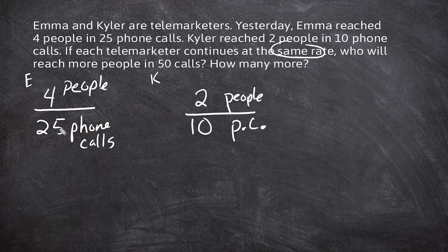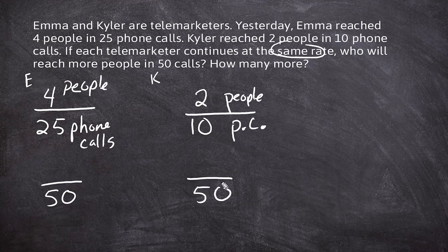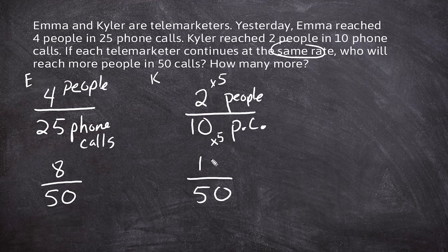We are going to convert 25 to 50 by scaling up. We also have to scale Kyler's 10 phone calls up to 50. To scale 25 up to 50, we multiply by 2, so we also double the 4, giving us 8 — these rates are proportional. The 10 increases by a factor of 5 to make 50, so we multiply 2 by 5, which is 10. At the same rate, Kyler will have contacted two more people than Emma in 50 calls.